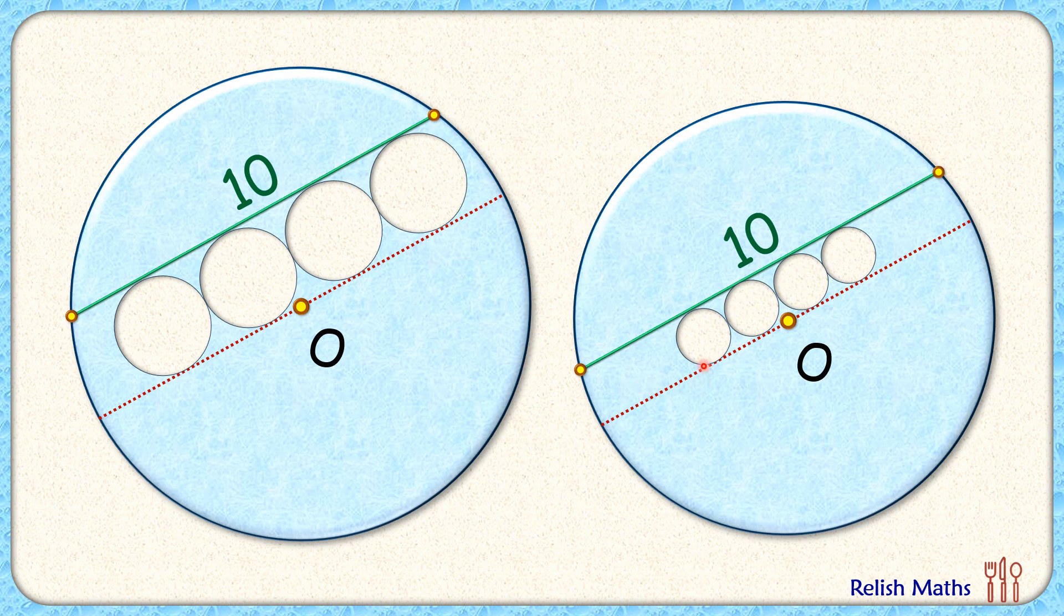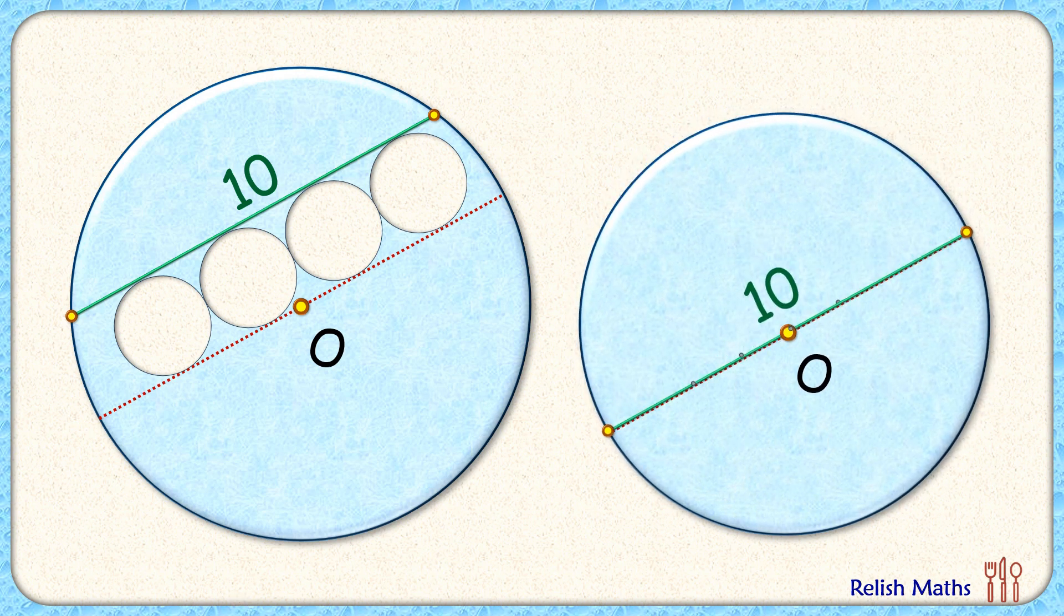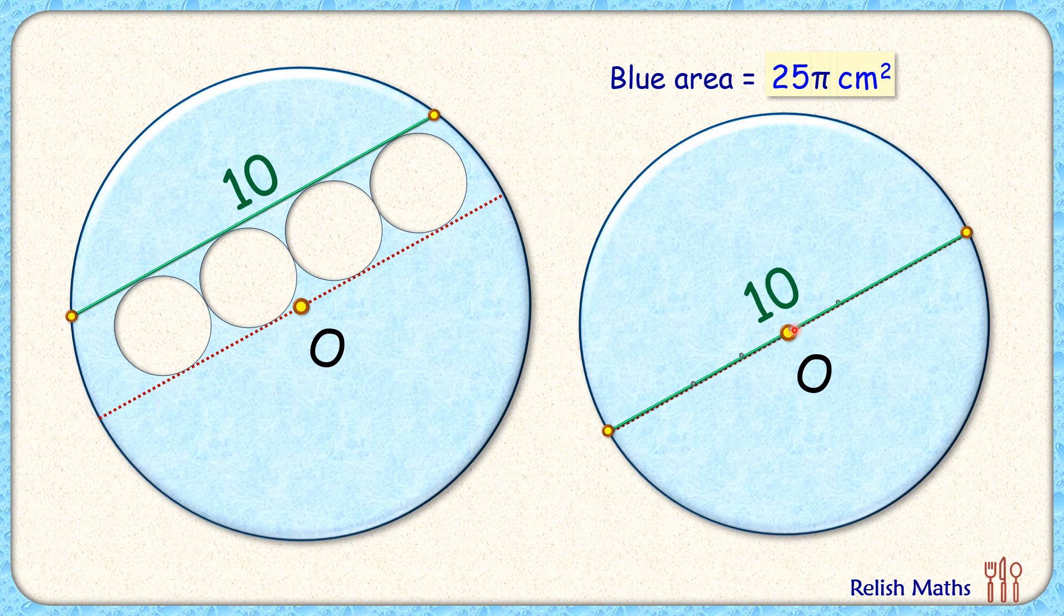So let's reduce the size of these circular holes to point holes. Now here the new figure still meets all the original conditions of our question. The only thing is the punch holes which were bigger in size before are now pinpoint in shape, and thus the loss of area because of these pinpoint holes is negligible. And thus the green chord which was 10 cm will now become the diameter of the circle with radius 5 cm. And the blue area will be the area of the full circle, that is πr² or 25π cm². And that's our answer.